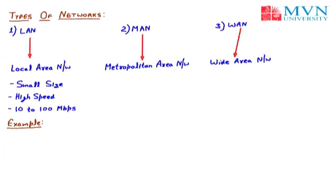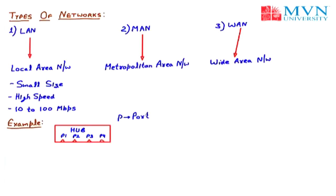To understand LAN, let's take the example of a hub. A hub is a LAN device which can connect multiple computers in a LAN. A hub can be divided into active hub and passive hub. In a hub we can connect multiple computers. Here we are taking a hub with four ports — P1, P2, P3, and P4, where P stands for port. A port is basically like a plug — we can insert a connector into it, such as the RJ45 connector of an Ethernet cable, to connect a computer with a LAN device like a hub or a switch.